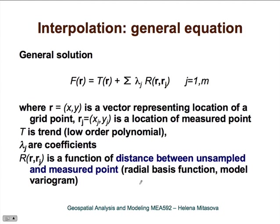In this section of the lecture on interpolation, we will look at some interpolation methods. Let's start with the general equation that says the interpolation function is a sum of trend and a weighted function of distance between unsampled and measured points. Based on the form of this function and the weights, we will get different interpolation methods.